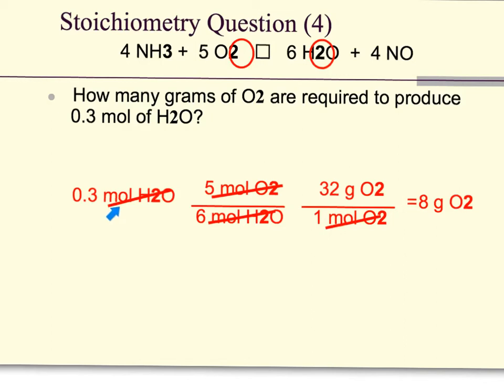We put our given moles of H2O times our coefficient ratio. The 5 moles of O2 on top, 6 moles of H2O on bottom.